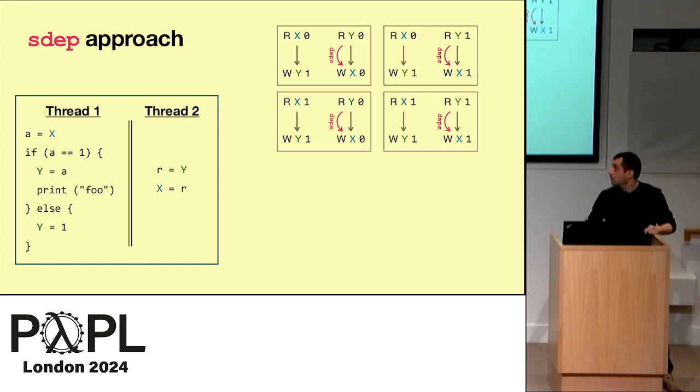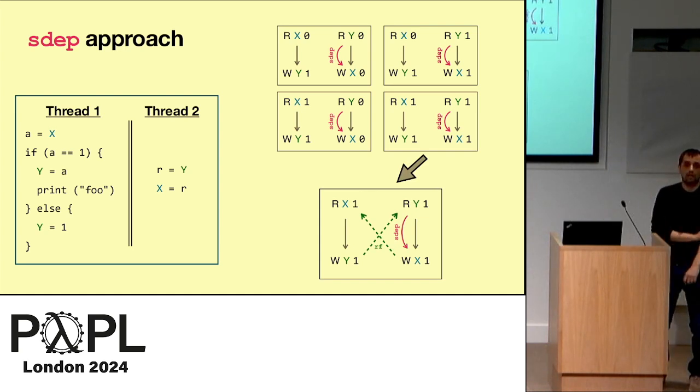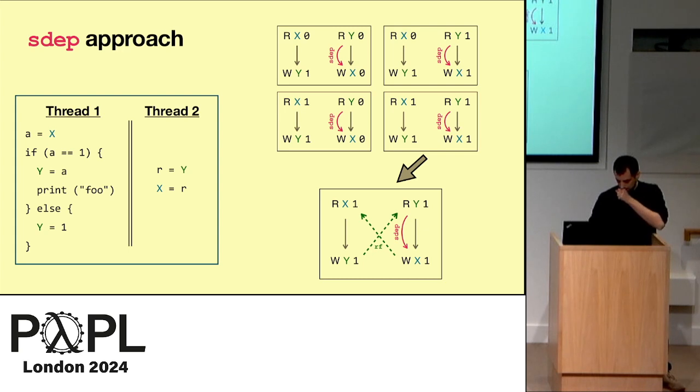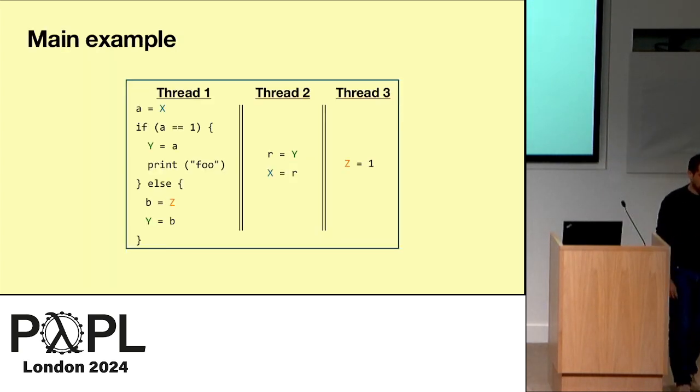So here it works because indeed when we focus on this last execution graph here, we can add these reads from edges and then we actually check consistency. And we can see it is consistent. There is no cycle. And this last execution graph depicted here is actually the one that is printing foo, because you read one from x. And so we say yes, foo can be printed. So this is how such a model can work.